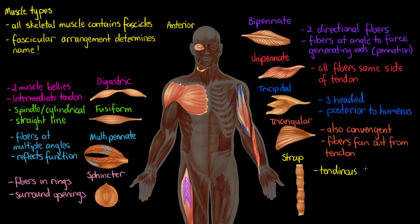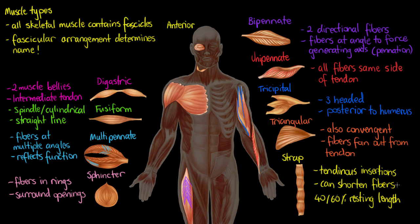That brings us to the last type — a strap muscle, or a strap muscle with tendinous insertions. These muscles are unique in that they can shorten their fibers anywhere between 40 and 60 percent of their resting length, which is a massive amount of contraction. The obvious example is the abs — when doing a sit-up or a crunch, those muscle fibers are shortening a significant amount.